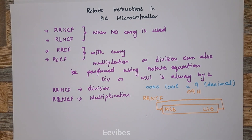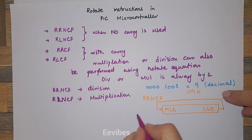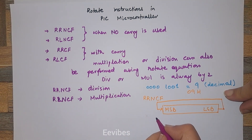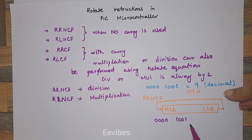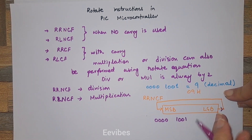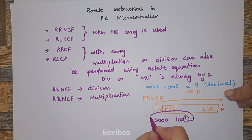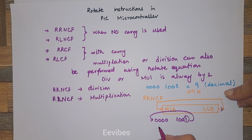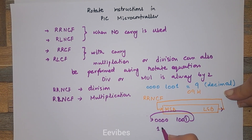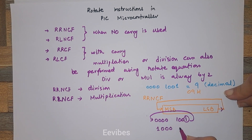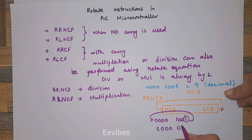So for the given number, the binary equivalent of 9, as we said, LSB should be copied into MSB. This one is actually the LSB and it should be moved to the position of the MSB. So what you will have is: this will become 1, 0, 0, 0 and you will be left with 0, 1, 0, 0.